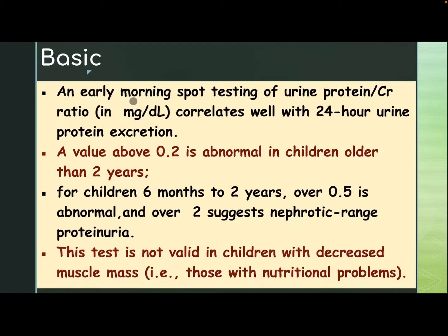An early morning spot test of urine protein-creatinine ratio in mg per deciliter correlates well with the 24-hour urine protein excretion. A value above 0.2 is abnormal in children older than 2 years. For children 6 months to 2 years, over 0.5 is abnormal, and over 2 suggests nephrotic proteinuria. This test is not valid in children with decreased muscle mass or those with nutritional problems.